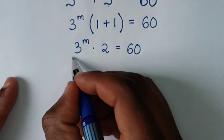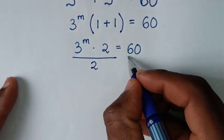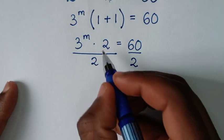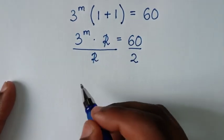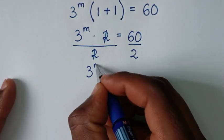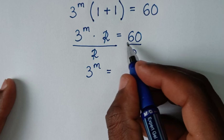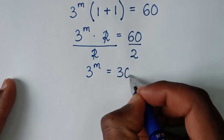From here we divide both sides by 2. The 2s cancel, giving us 3 power of m is equal to 60 divided by 2, which is 30.